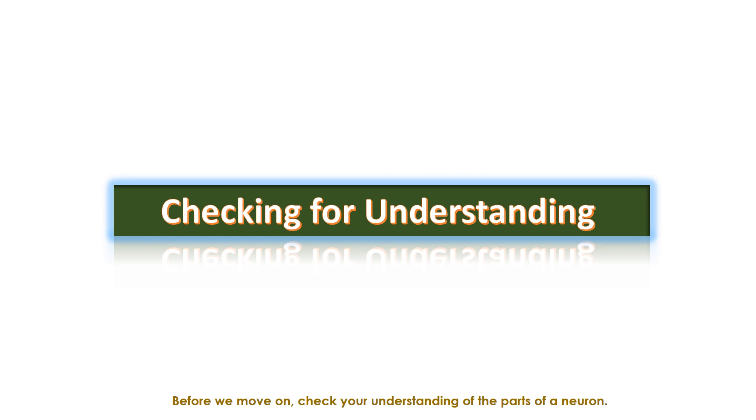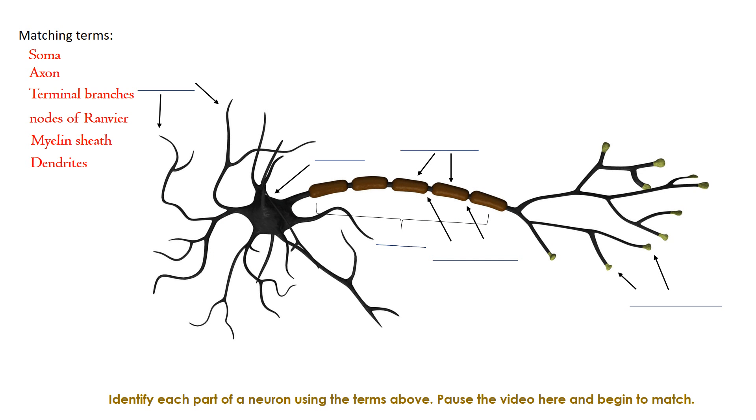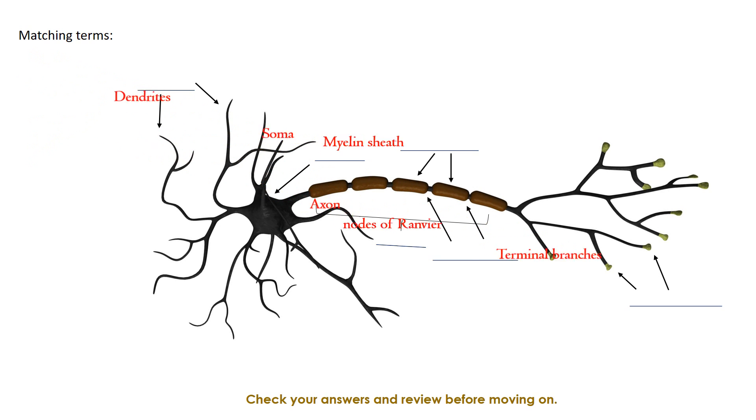Before we move on, check your understanding of the parts of a neuron. Identify each part of a neuron using the terms above. Pause the video here and begin to match. Check your answers and review before moving on.